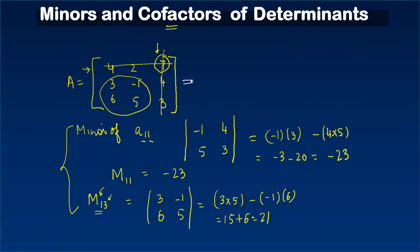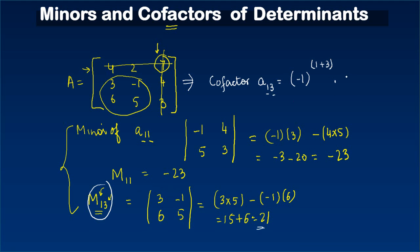For the 3×3 matrix, the cofactor of a₁₃: i=1, j=3, so (-1)^(1+3) × M₁₃ = (-1)⁴ × 21. Since 1+3=4 is even, (-1)⁴ = 1, so the cofactor of a₁₃ equals 21.